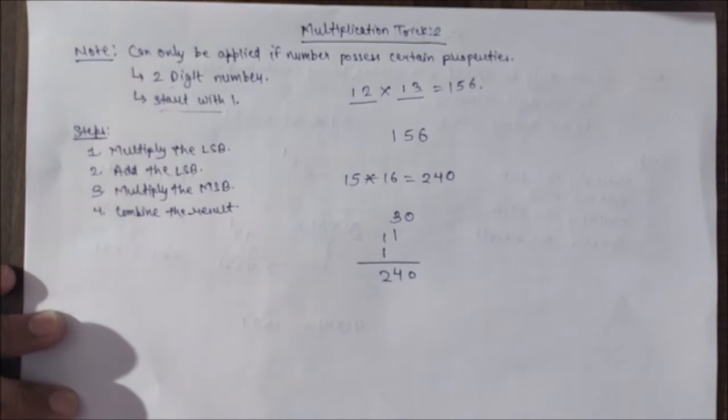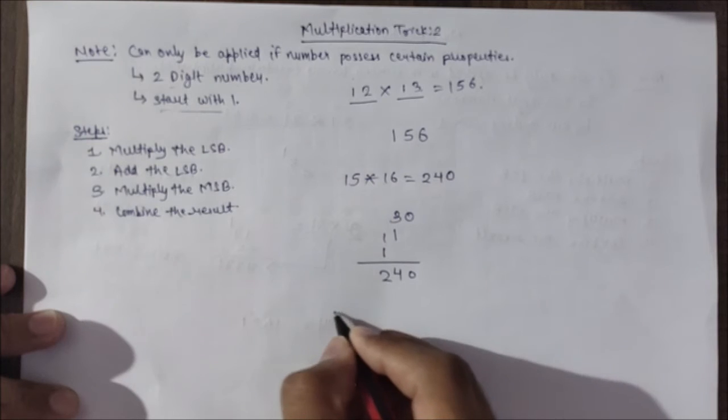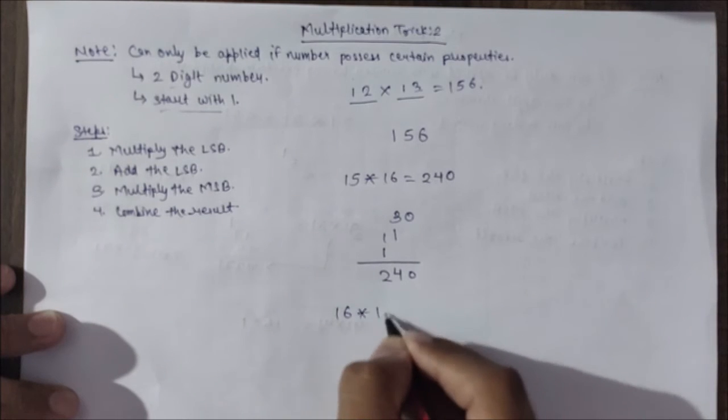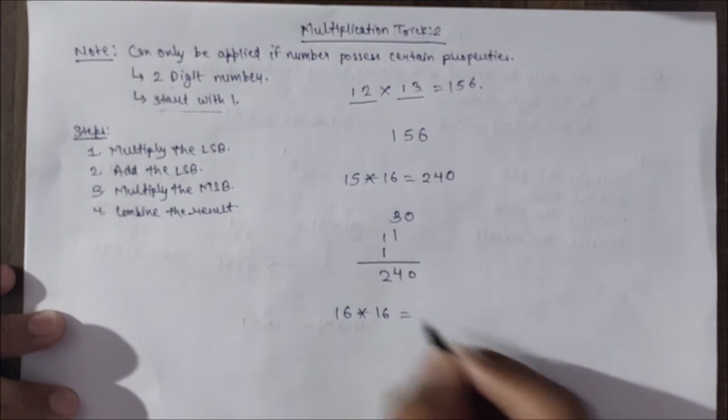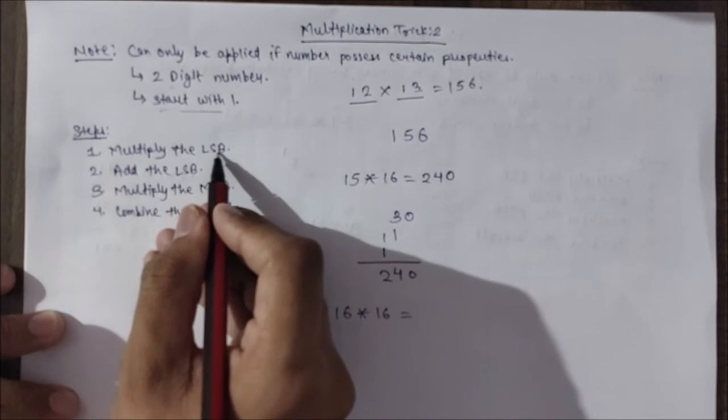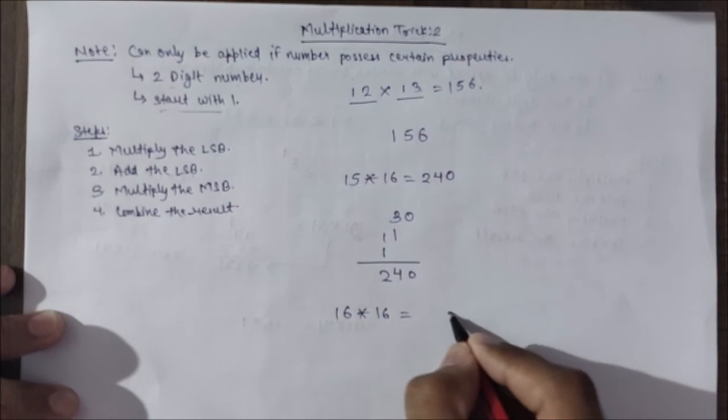Let's take one more example. 16 multiplied by 16. Multiply the LSB, that is 6 multiplied by 6: 36.